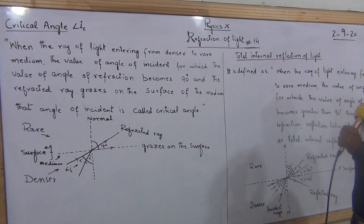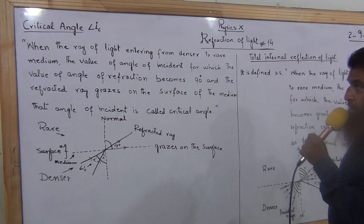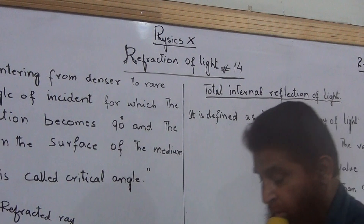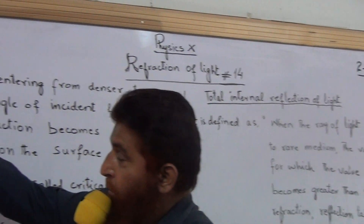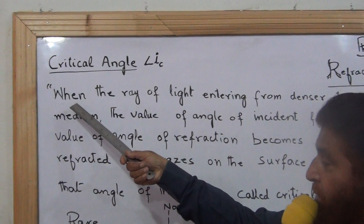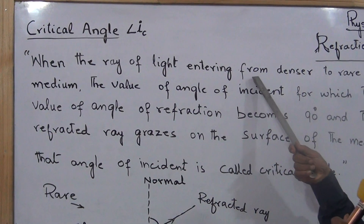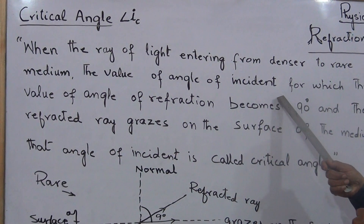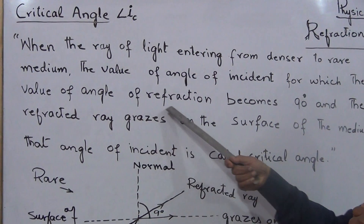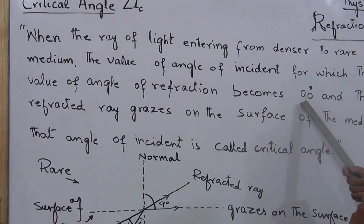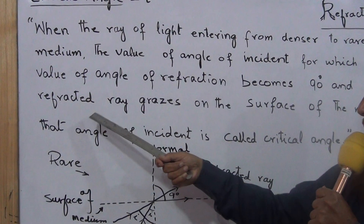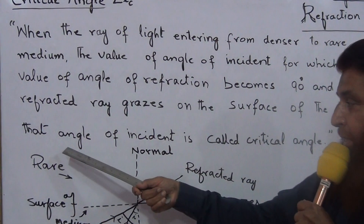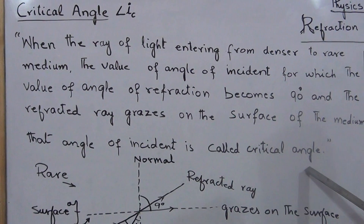Dear student, now we are going to study about critical angle, chapter 14, Reflection of Light. Critical angle — critical means complex — when the ray of light enters from denser to rare medium, the value of angle of incidence for which the value of angle of refraction becomes 90 degrees and the refracted ray grazes on the surface of the medium. That angle of incidence is called the critical angle.